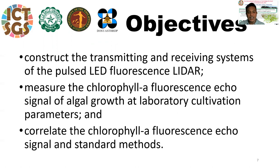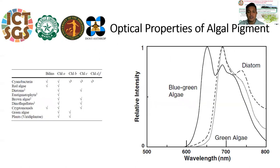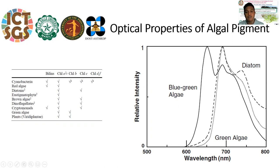And lastly, to correlate these measurements to the standard methods, which will be presented later on. There are significant specific optical properties of algal samples — relative intensity varies based on blue-green algae, green algae, and diatom. However, almost all algae consist of a particular pigment, which is chlorophyll A.